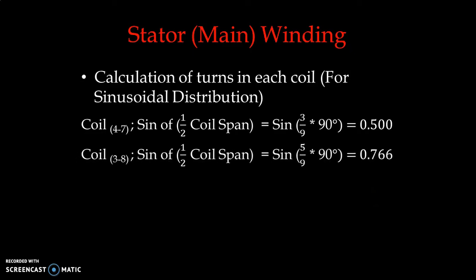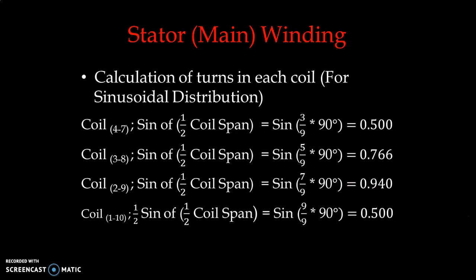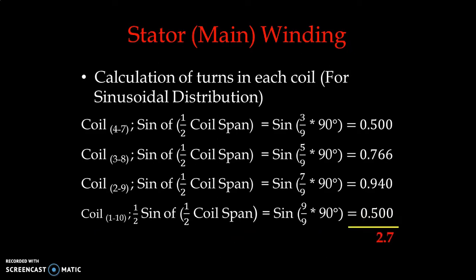For coil 38, sine of half of the coil span: we have a coil span of 5/9, and it comes to 0.766. For coil 29, sine of half of the coil span with 7/9, it comes to 0.940. For the outermost coil 110, as discussed earlier, the number of turns is half, so we take one half of sine of the half coil span, giving 0.50. The total comes to 2.7.